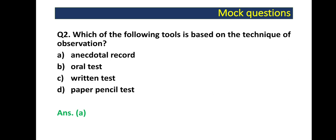Next question: Which of the following tools is based on the technique of observation? Hamare paas char options hain — Anecdotal Record, Oral Test, Written Test, ya Paper Pencil Test. Iska answer hoga Anecdotal Record, kyunki yeh aise records hote hain jismein hum particular skill ko observe karte hain, chahe woh attitude ho, koi skill ho, ya behavior ki observation. Such records provide cumulative information on student learning and direction for further instruction. Correct answer is Option A.